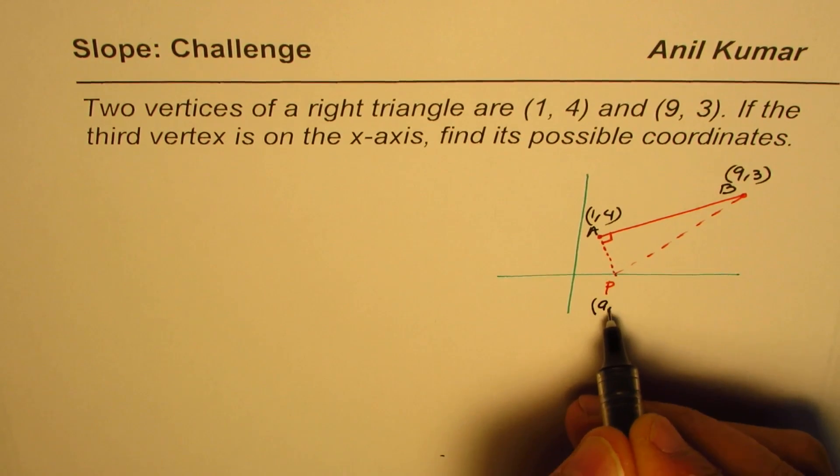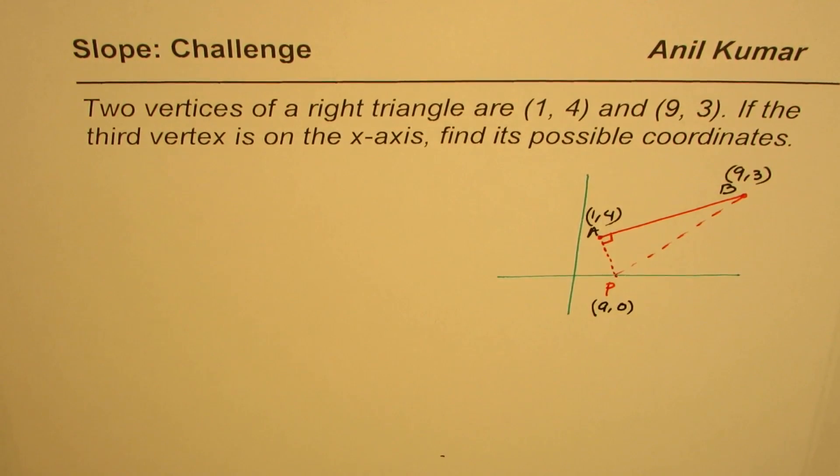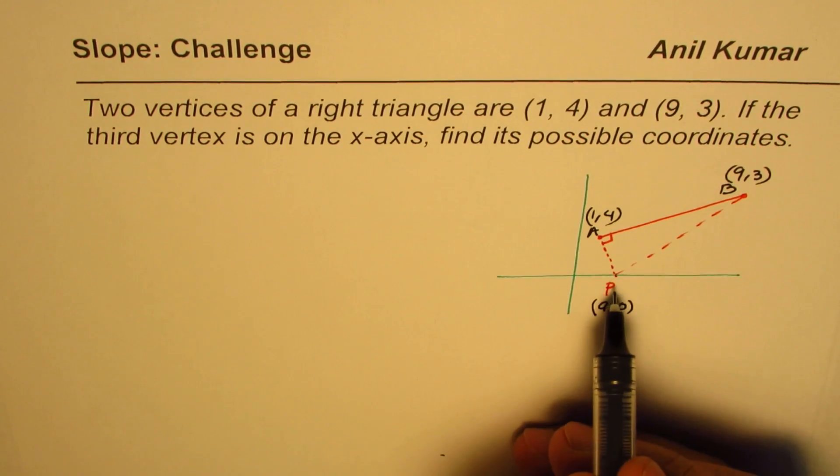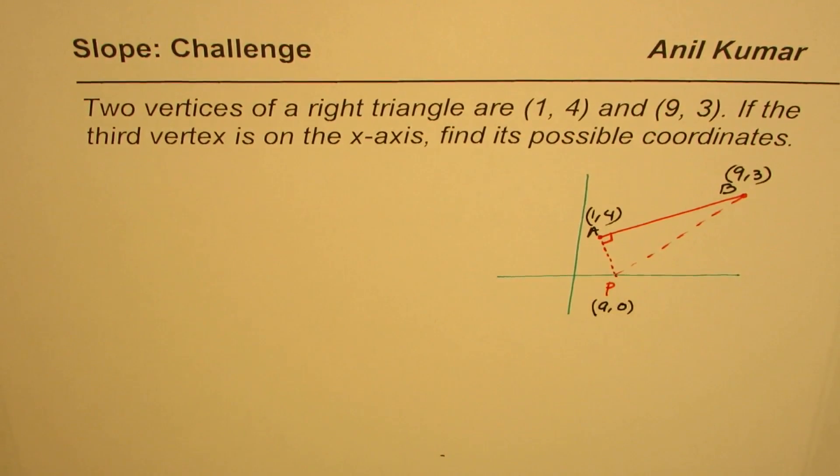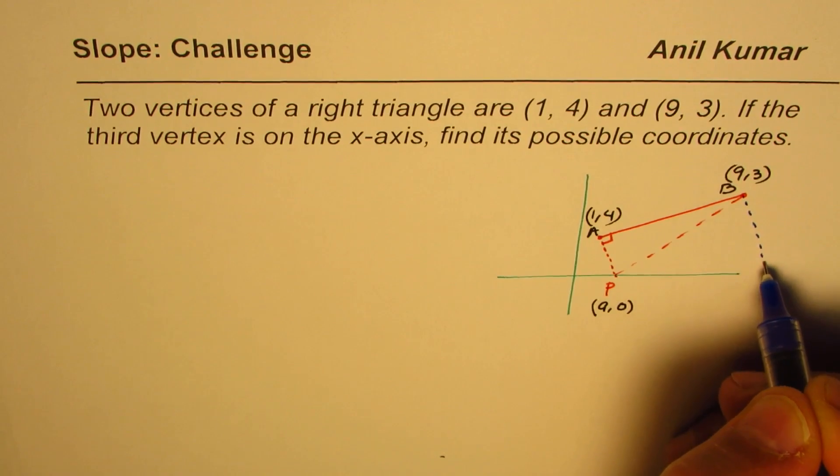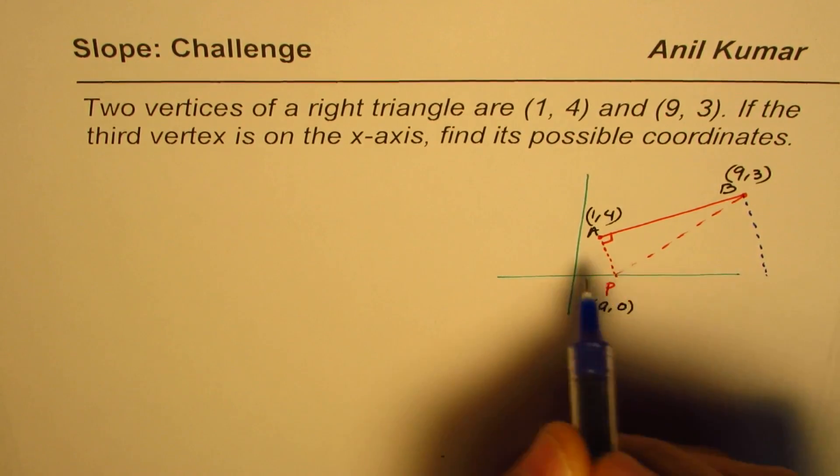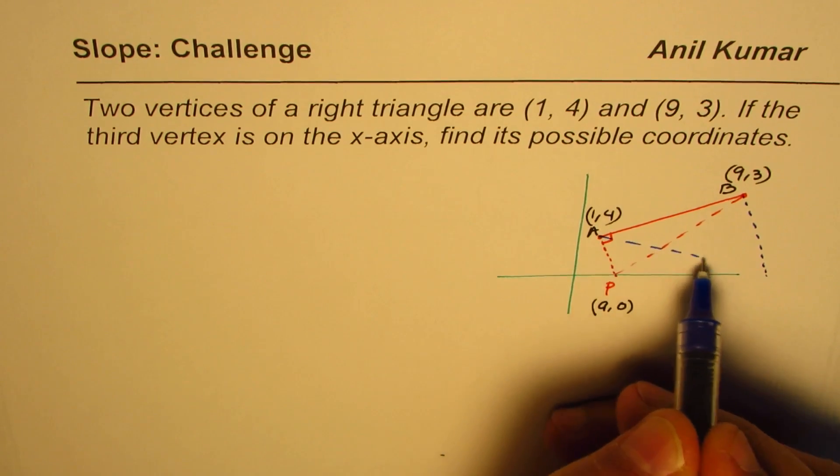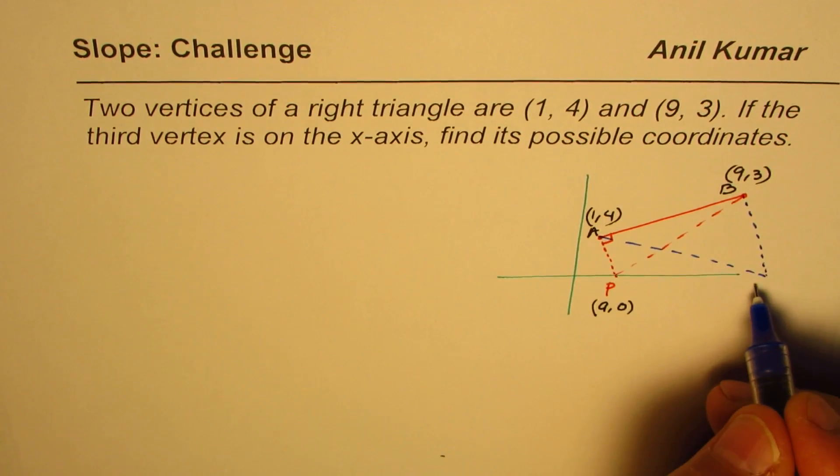Since y value is zero, we can find P. Another solution to the same question could be we could have a right triangle with 90 degrees at B. In that case, that could be the solution, and let's say that point is Q and we'll calculate this as (b, 0) and find the value of b.